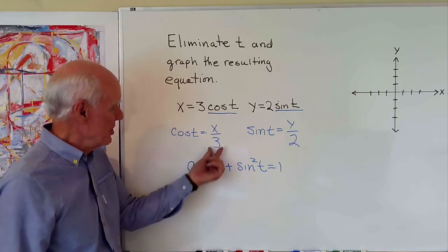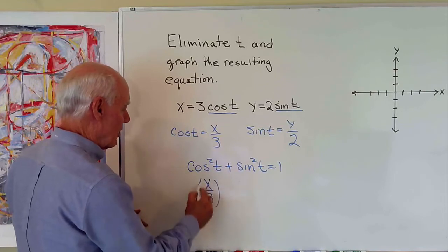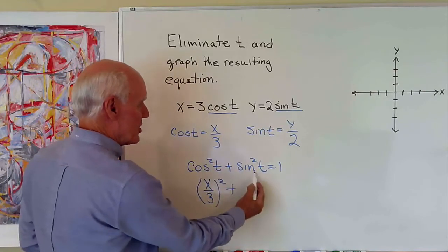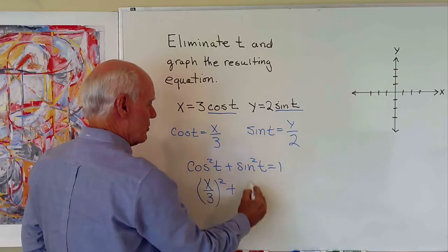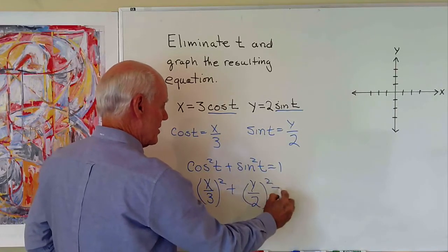So cosine t is equal to x over three, so this is x over three quantity squared, plus sine of t squared is equal to one.